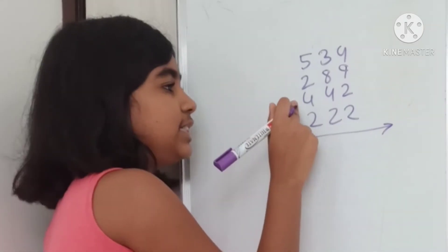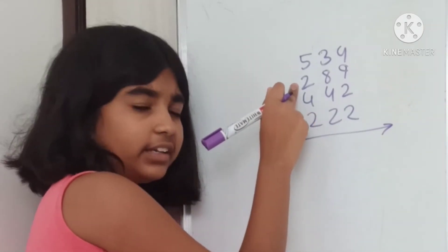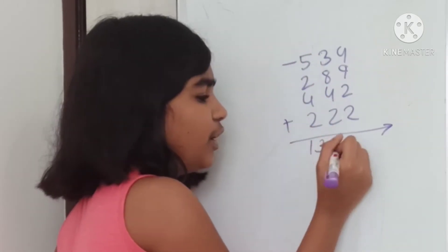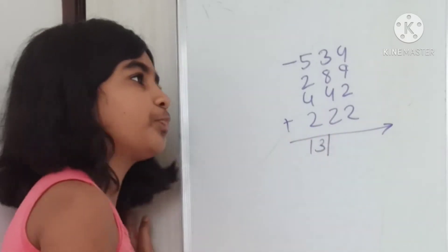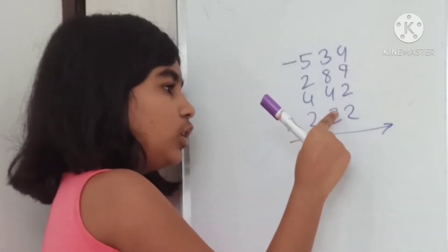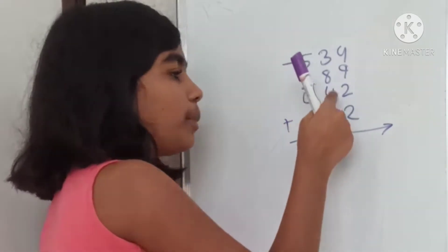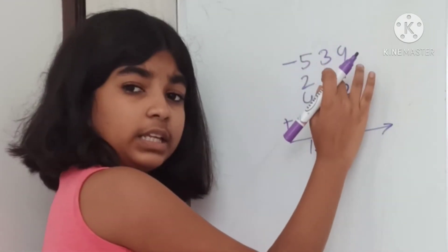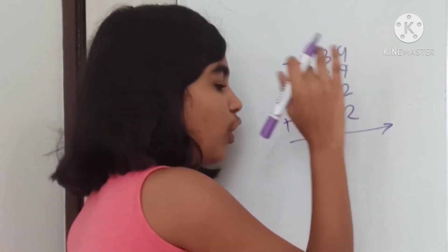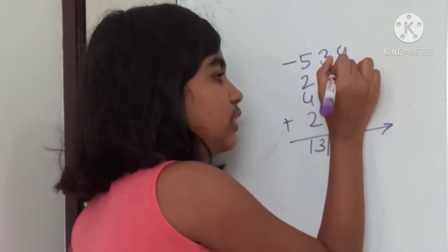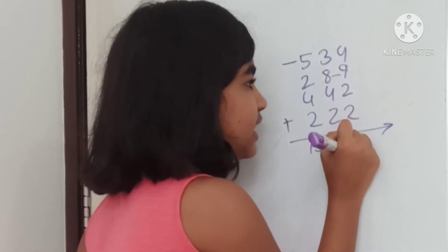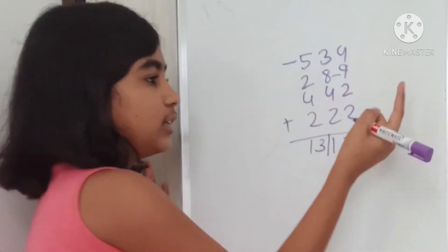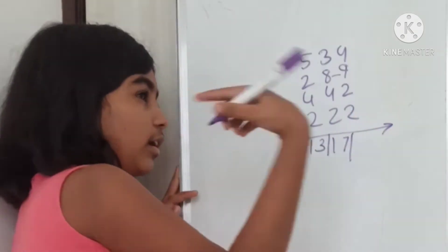Left to right, we'll start with the left column. 4 plus 2, 6. 6 plus 2, 8. 8 plus 5, 13. Take 3 and 1. Slash. Now, 4 plus 2 is 6. 6 plus 8 is 14. 4, 7. Now, the right side column.